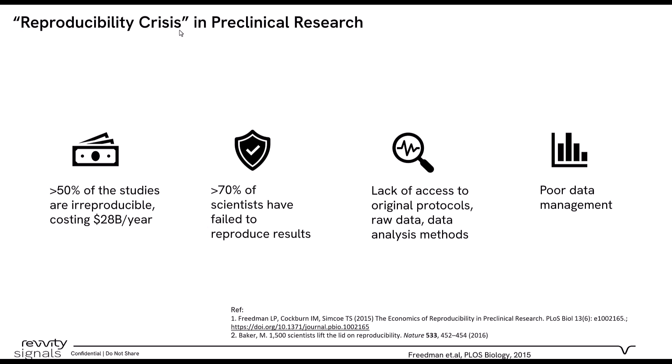Another survey published in Nature showed that more than 70% of the researchers surveyed said that they are unable to reproduce the published or legacy data. So this is very disturbing. But what could be the reason? There are many factors, but the one that we often hear is lack of traceability. Researchers say that they're unable to access original protocol raw data or data analysis methods, and therefore they're unable to reproduce the data. Moreover, with advancement of technologies, we're now generating bigger and larger data sets that are getting harder and harder to manage. Therefore, it's important for researchers to have access to a system that can standardize their workflows and also centralize the data.